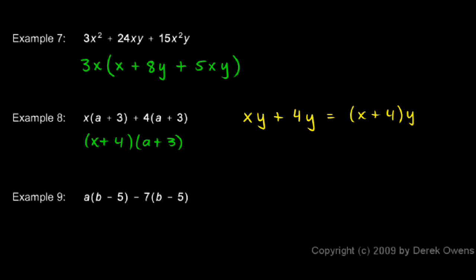A very similar approach is taken with number 9. We have a times b minus 5 minus 7 times b minus 5. So in other words, you can think of it as a times this minus 7 times this. So the this, the b minus 5, is the same in both terms. And that is what can be factored out.